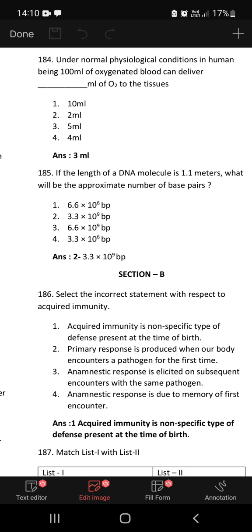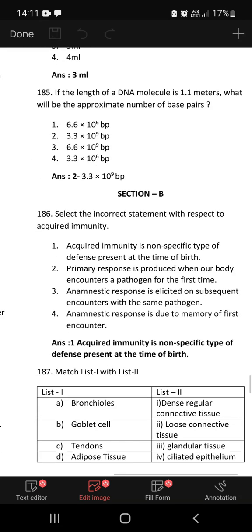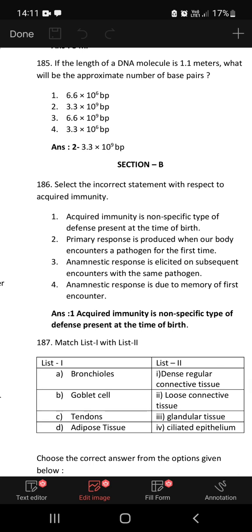Natural selection where more individuals acquire specific character value other than the mean character value leads to directional change. Under normal physiological conditions in human being, 100 ml of oxygenated blood can deliver 5 ml of oxygen to the tissues. If the length of DNA molecule is 1.1 meter, what will be the approximate number of base pairs? You have to say it in nanometers. The approximate number of base pairs will be 3.3 into 10 to the power of 9 bp.